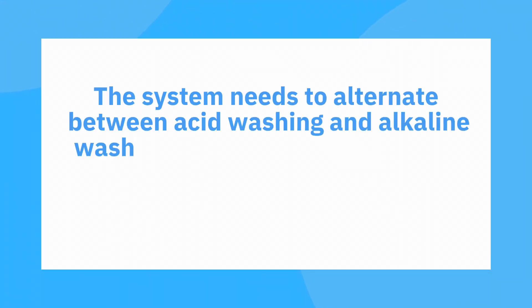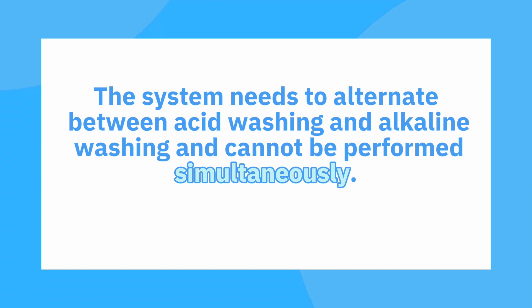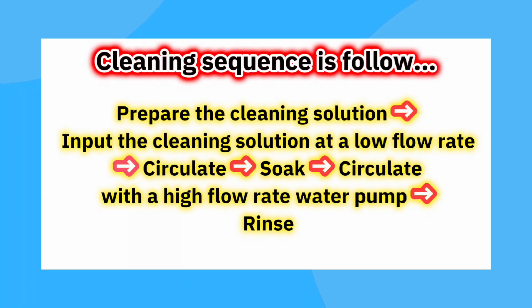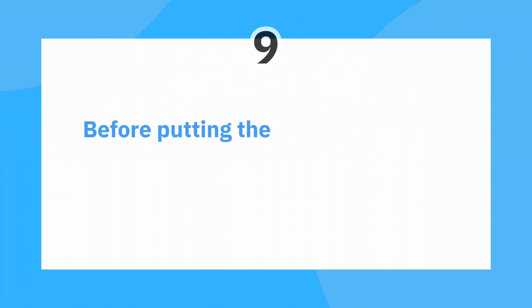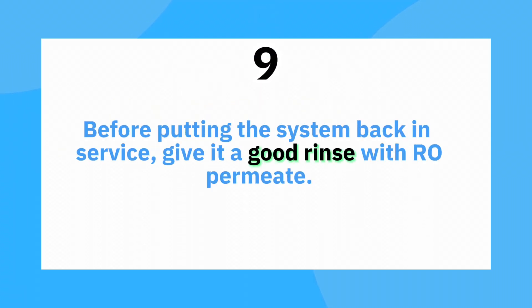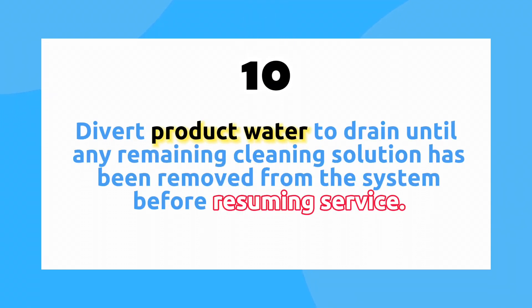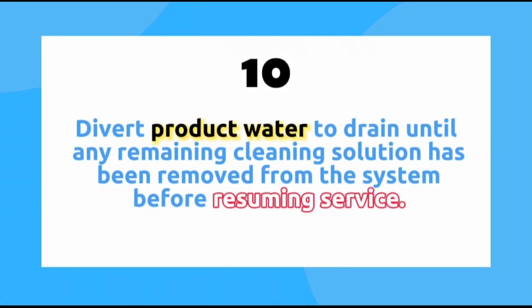In general, the system needs to alternate between acid washing and alkaline washing — these cannot be performed simultaneously. The reasonable cleaning sequence is as follows: prepare the cleaning solution, input it at a low flow rate, circulate, soak, then circulate with a high flow rate water pump, and rinse. Step 9: Before putting the system back in service, give it a good rinse with RO permeate. Step 10: Divert product water to drain until any remaining cleaning solution has been removed from the system before resuming service.